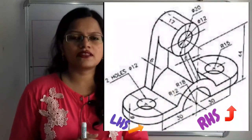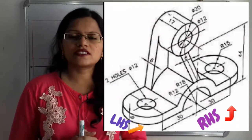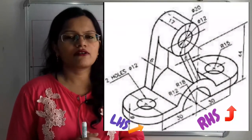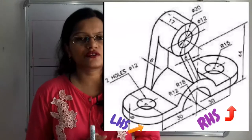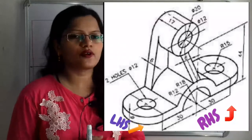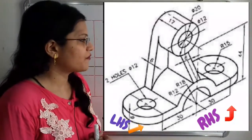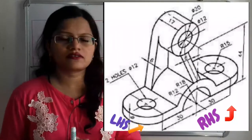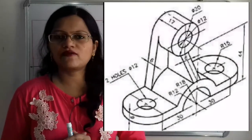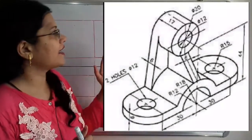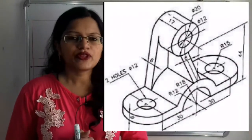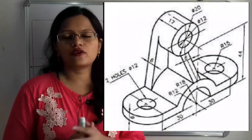In the first angle projection method the front view is considered as the principal view, so we consider the right hand side as the front view. Now we measure the height. From the base up to the center of the circle it is 44 millimeters, and above that the radius of the circular structure is 10. So 44 plus 10 equals 54 millimeters. In this way the length, height, and width are decided.